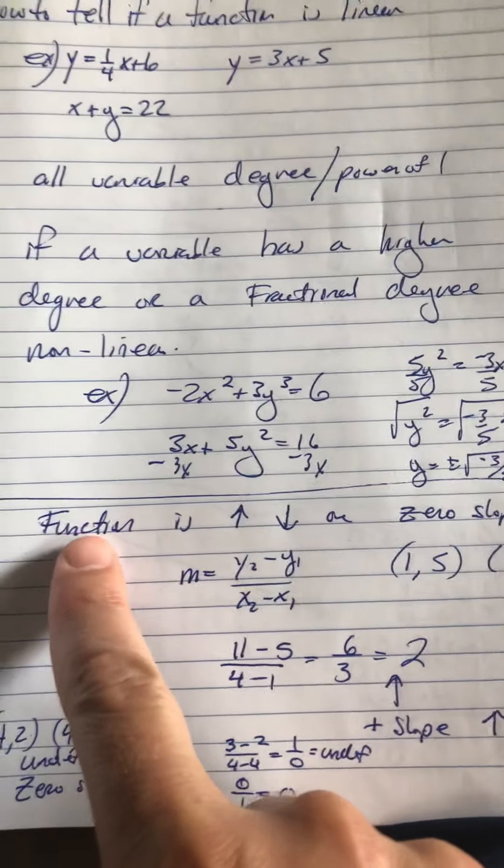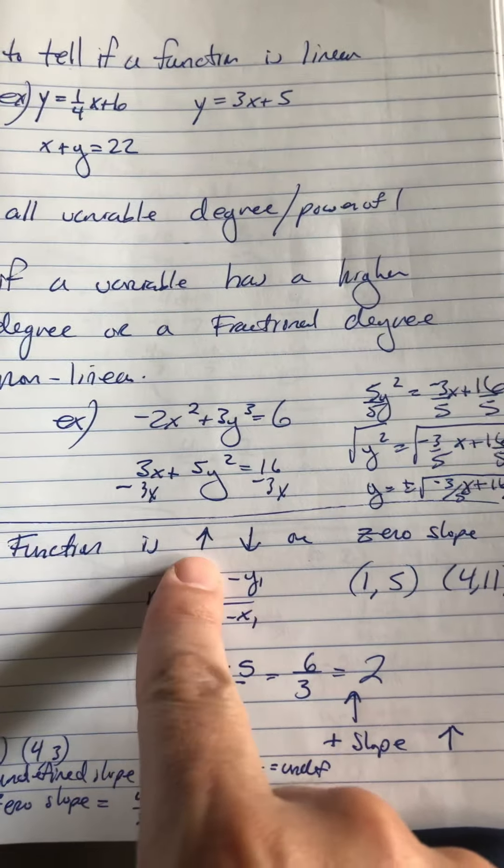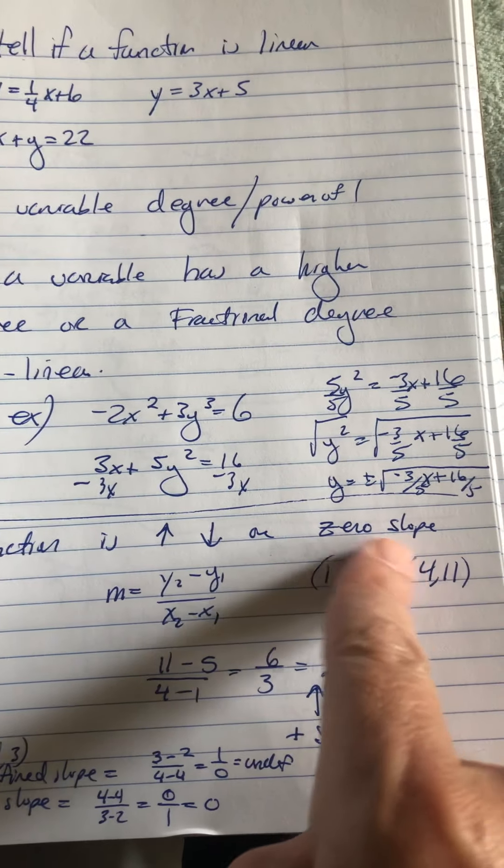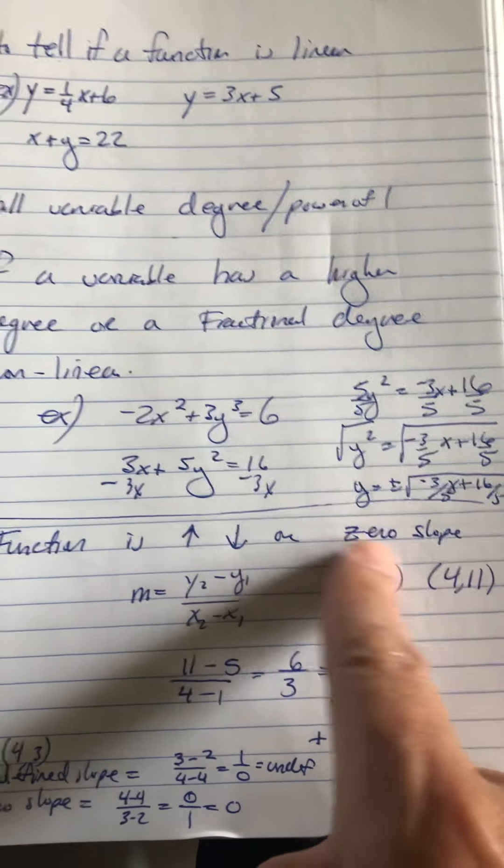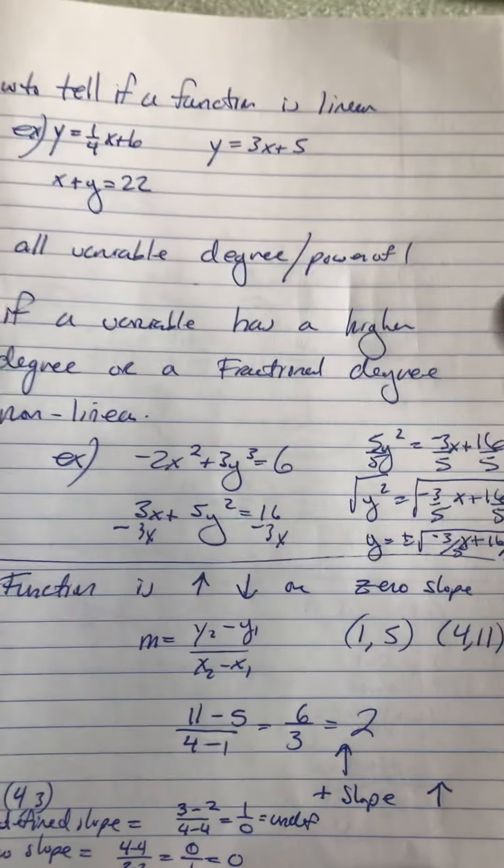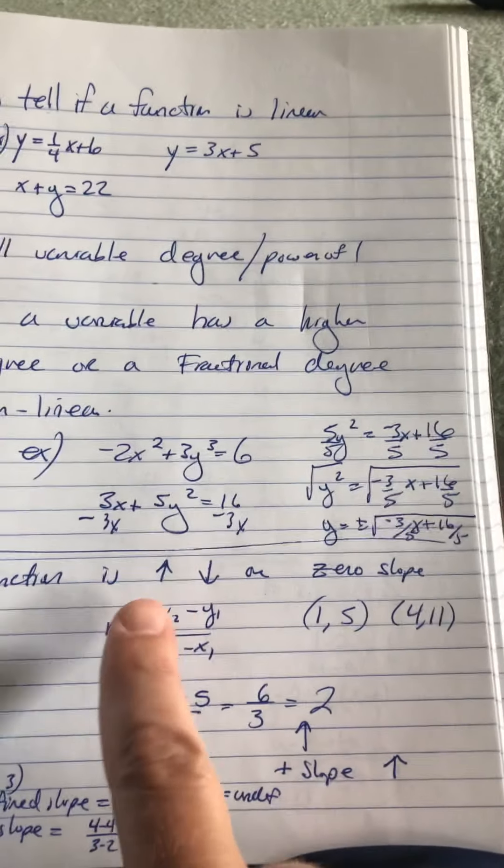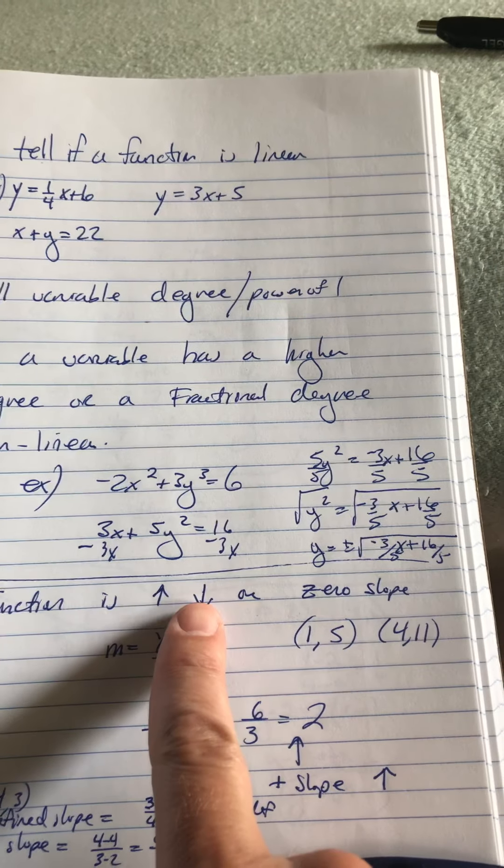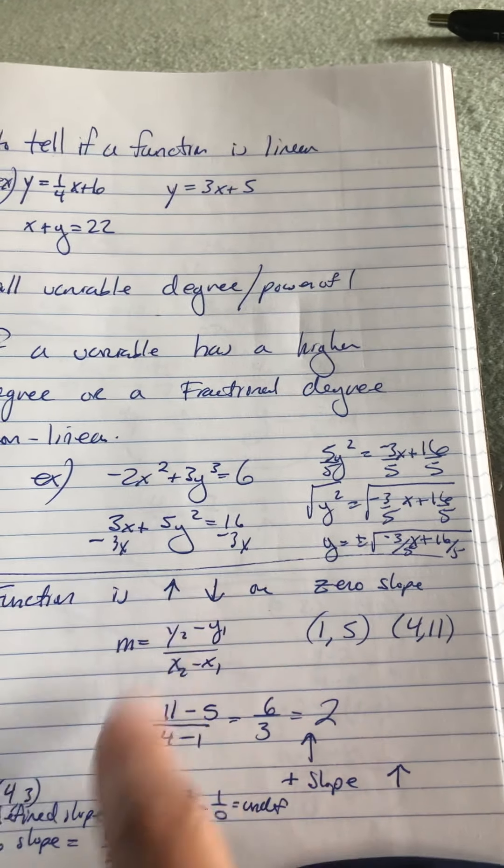All right, so they ask you to determine if something, a function is increasing or decreasing. And coming into that would be something like zero slope as well, so I added that in. So, zero slope is when the line is flat. It's perfectly horizontal. It's not increasing. It's not decreasing. The way you tell if something is increasing is if the slope is positive. The way you tell if something is decreasing, the slope is negative.